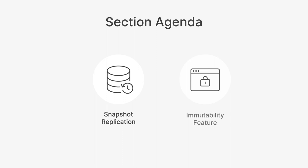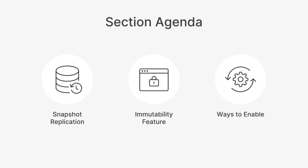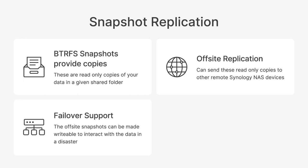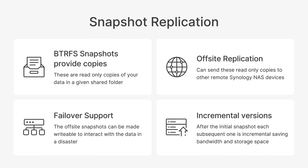Snapshot replication is an application you can download on your Synology NAS. It provides BTRFS snapshots of data residing in your shared folders or thin-provisioned LUNs. These snapshots are read-only copies of your data that can be replicated off-site and even support failover at the secondary location. Should something happen to your primary site due to a natural disaster, you can failover data to the secondary site and continue working. Snapshots also provide incremental versions each time a snapshot is taken and replicated — after the initial replication, it only sends changed data.